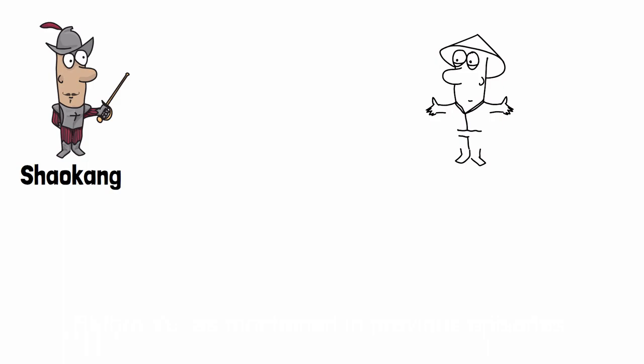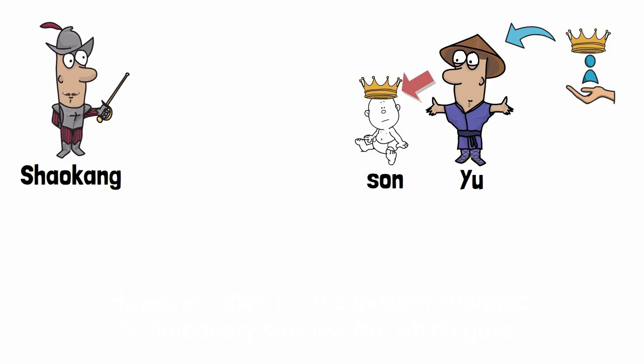In the next episode of our story, we will talk about the revival of Shaokang. Before Yu, as mentioned in previous episodes, the throne was passed down through a system of abdication. However, after Yu, the system changed to hereditary succession, which gave rise to the first Chinese dynasty, the Xia dynasty.